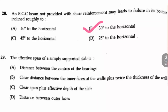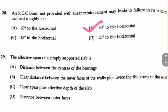29th question: the effective span of a simply supported slab. For a simply supported slab there will be two conditions — one is the distance between the center of the bearings, that is their supports, and another one is clear span plus the effective depth of the slab.